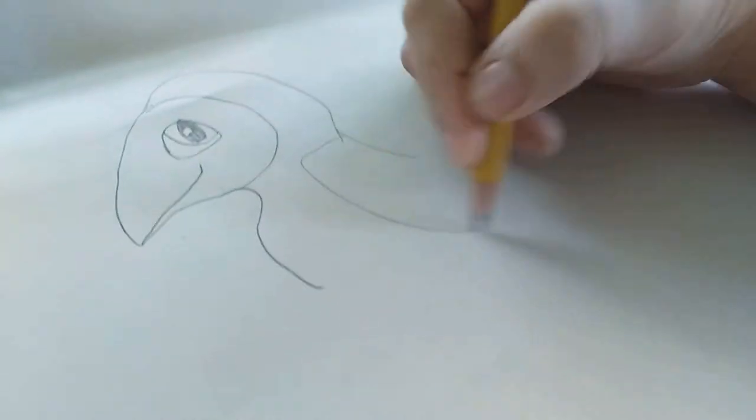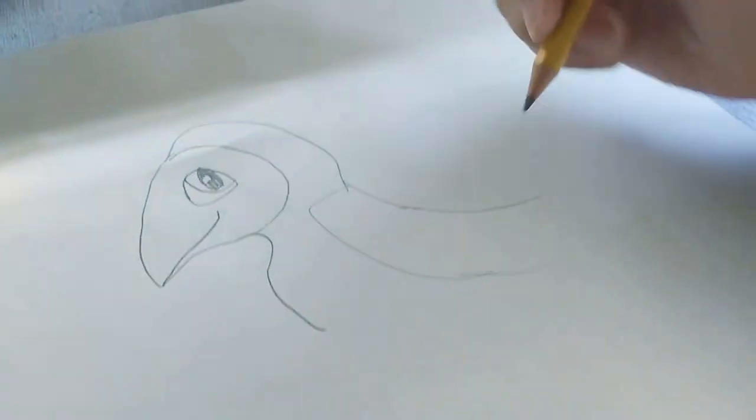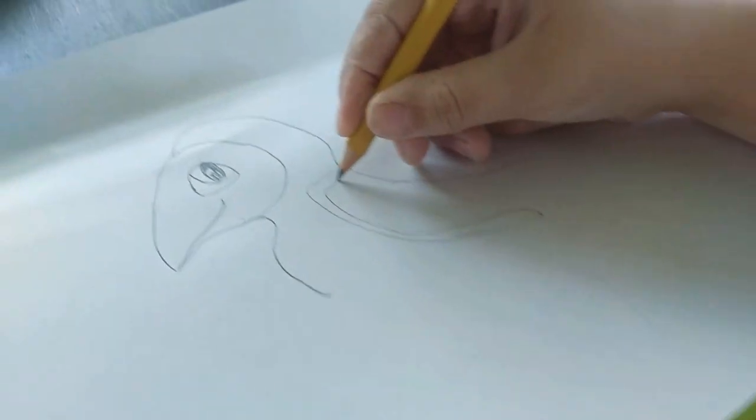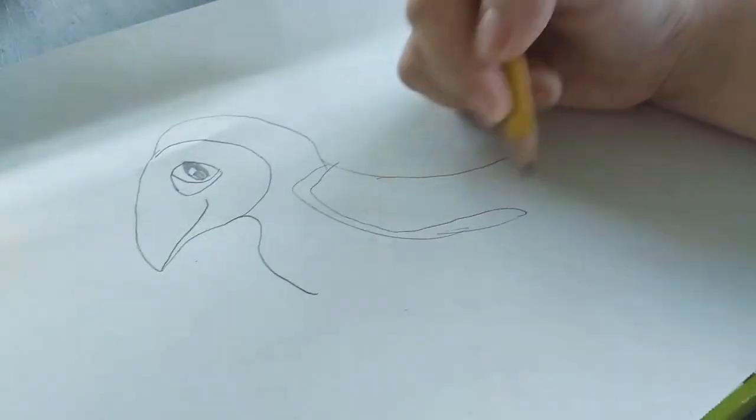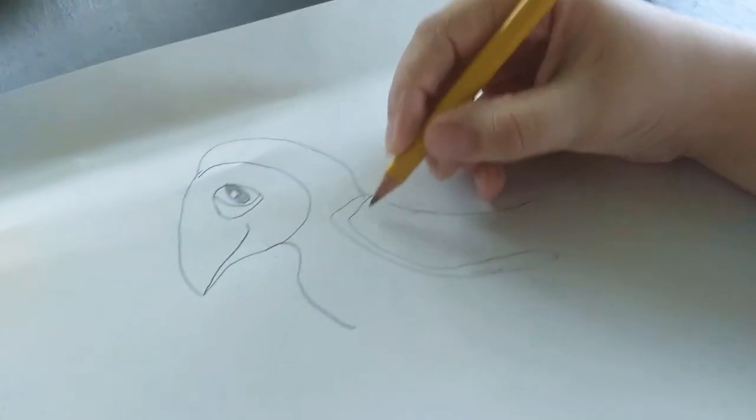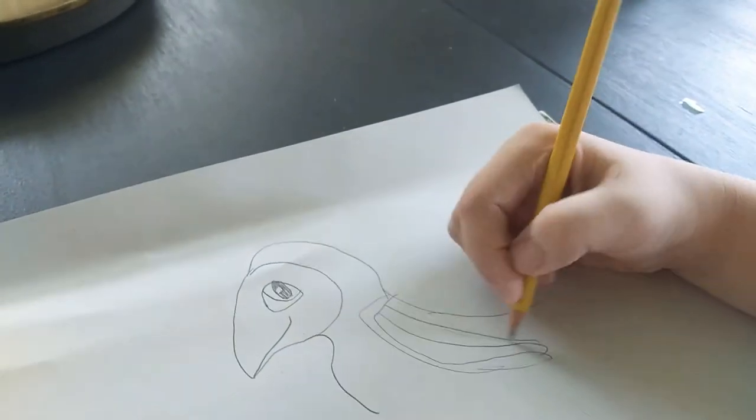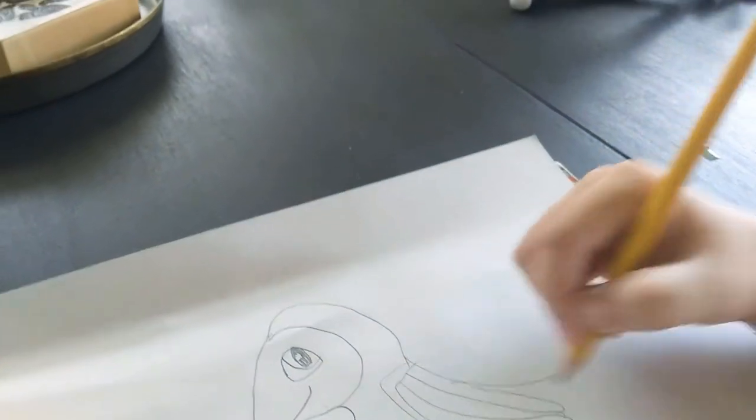Its wings are going to be folded in. So we're going to draw some more lines. Like that. It kind of looks like a boat. And we keep on drawing it like this to make the feathers on its wings.